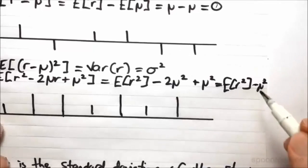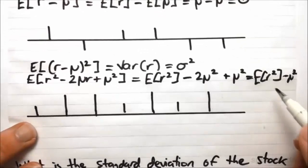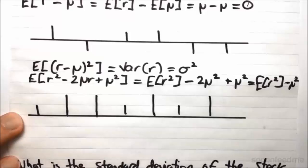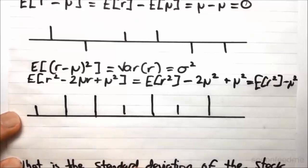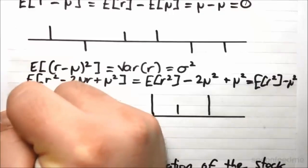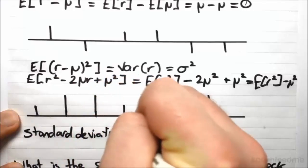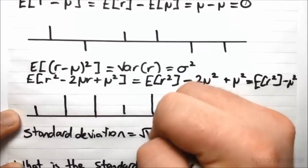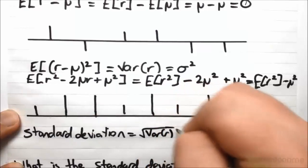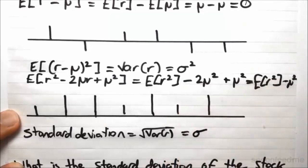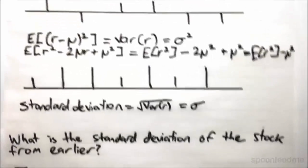This just becomes the expected value of R squared minus mu squared. Nice and simple. And we like to use this when we're actually calculating. So it's very easy to work with. So that's our variance. And we typically don't actually like to use the variance as much as we like to use the square root of the variance, which we call standard deviation. So standard deviation equals the square root of the variance. And obviously we've got variance as sigma squared, so this is sigma.